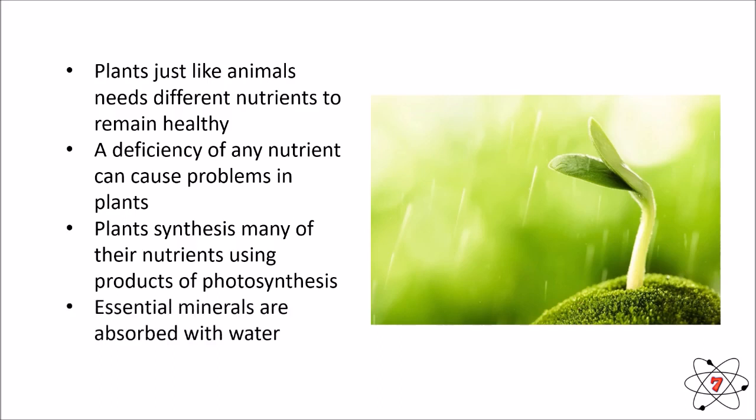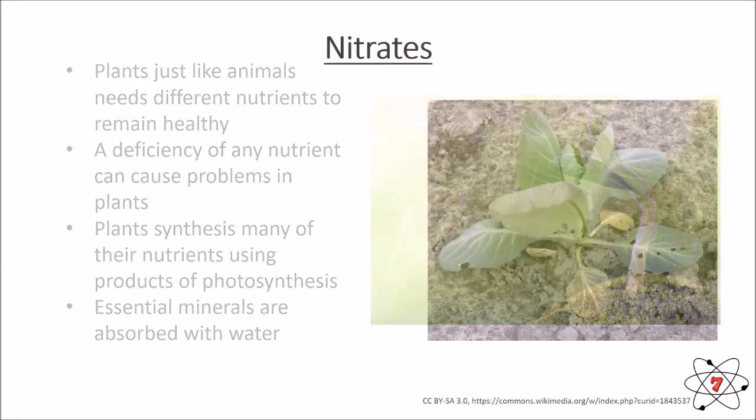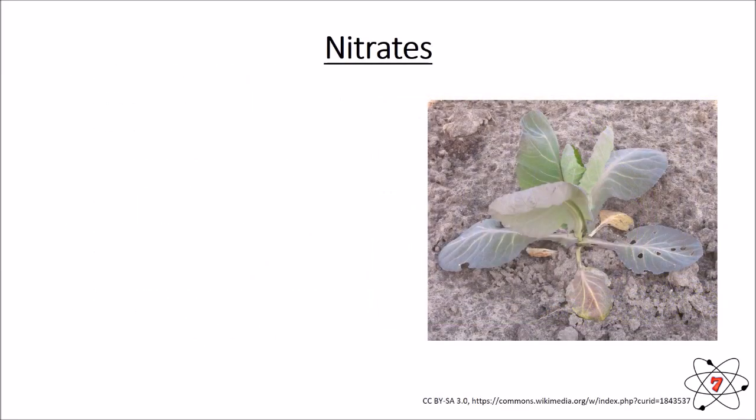Plants can make an awful lot just from glucose, their raw material made from photosynthesis. Any nutrients they can't make, which are mainly mineral salts, need to be absorbed by the plant when they absorb water in their roots.